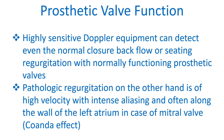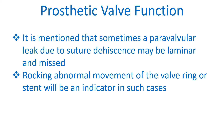Highly sensitive Doppler equipment can detect even the normal closure backflow or seating regurgitation with normally functioning prosthetic valves. Pathologic regurgitation, on the other hand, is of high velocity with intense aliasing and often along the wall of the left atrium in case of mitral valve. Sometimes a paravalvular leak due to suture dehiscence may be laminar and missed. Rocking or abnormal movement of the valve ring or stent will be an indicator in such cases.